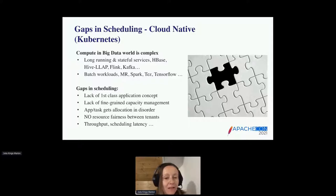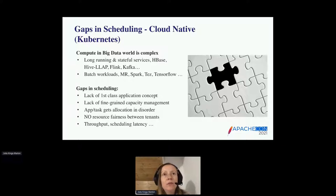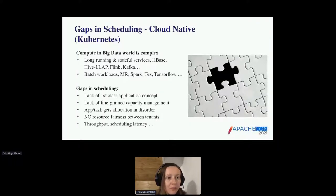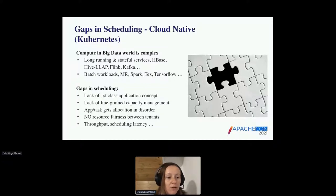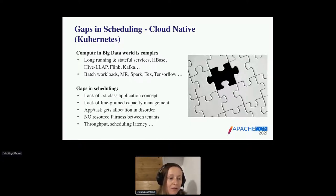What were the gaps in scheduling? Until now we found a gap in the first-class application concept — most schedulers are doing scheduling pod by pod, but there was no way to handle the links or dependencies between different pods. We had a lack of fine-grain capacity management. Applications and tasks got allocated in a disordered manner. There was no resource fairness assured between different tenants, and the scheduling latency was also a problem.